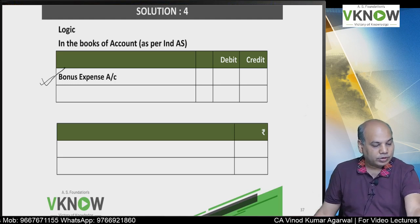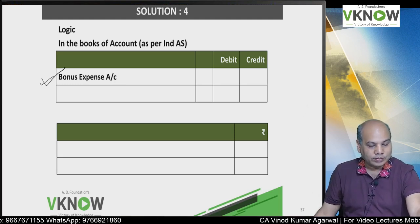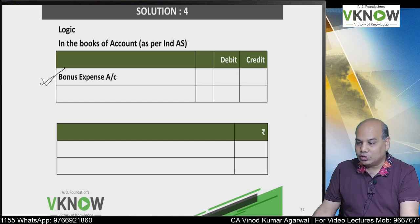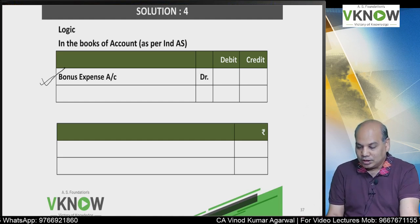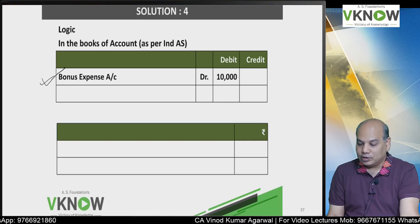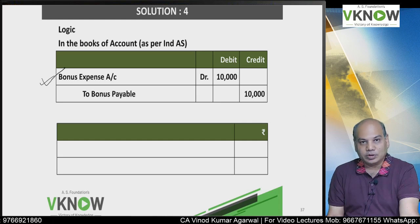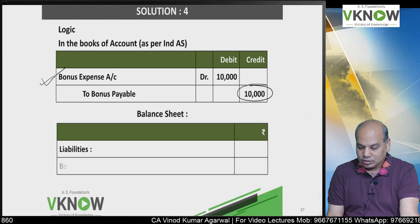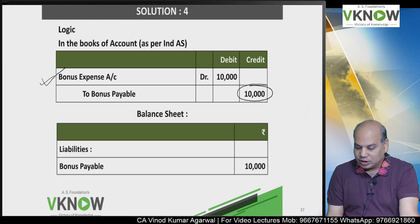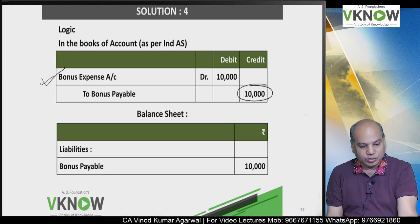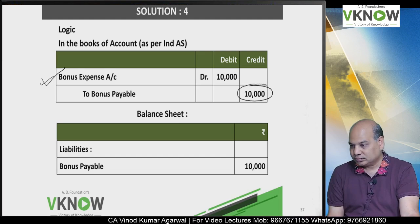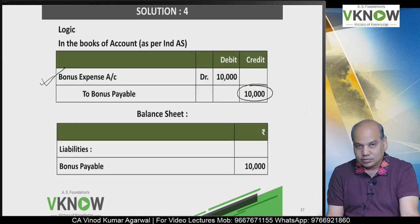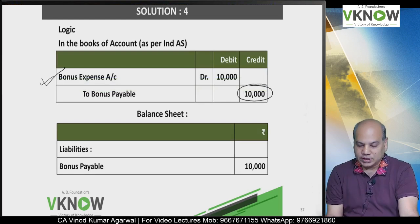For understanding, first few questions will go extremely slow. You may get bored, that is your problem. I am not here to please you. In the books of account, the entry will be bonus expense account debit to bonus payable, and it appears in the balance sheet — liability side — as bonus payable 10,000. This is my books of account presentation.